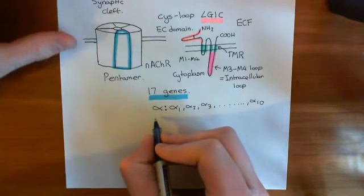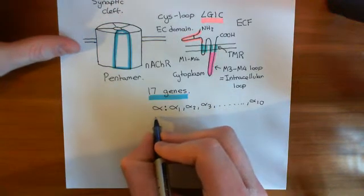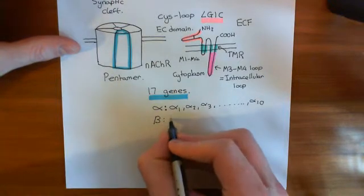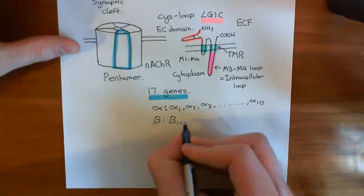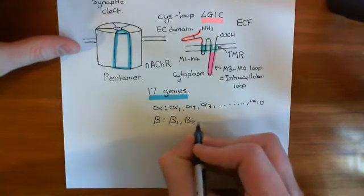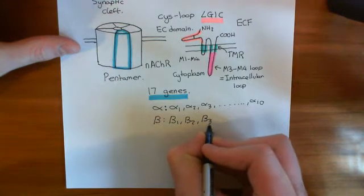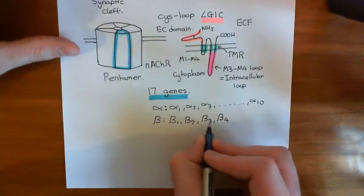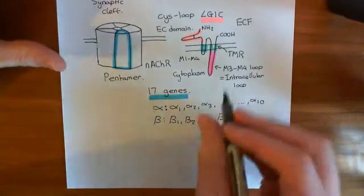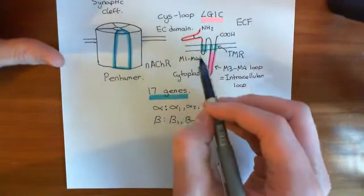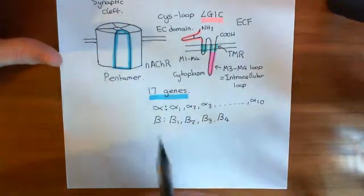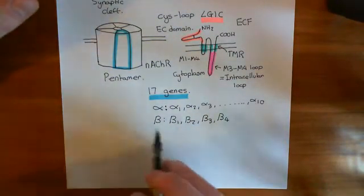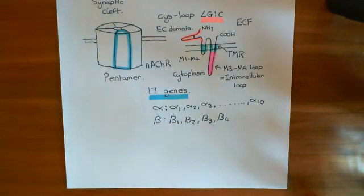That's only 10 of the 17 genes. We have another family known as the beta family, which has four genes: beta 1, beta 2, beta 3, and beta 4. These are four genes which code for nicotinic acetylcholine receptor protein subunits that are similar enough to perform the same function, but they do have slightly different sequences of amino acids.